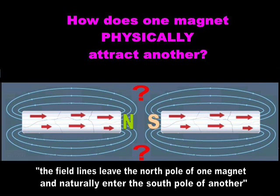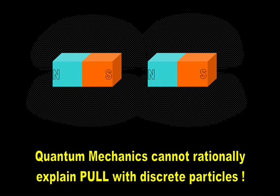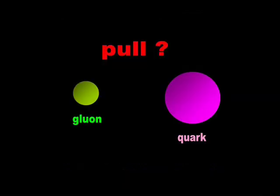If there is one force that quantum mechanics will never be able to explain rationally with discrete particles, it is the force of pull. How does a gluon pull on a quark? The rope hypothesis, on the other hand, enables us to explain attraction rationally.